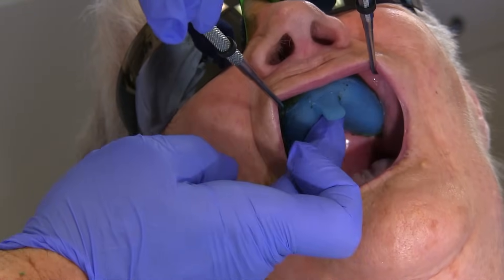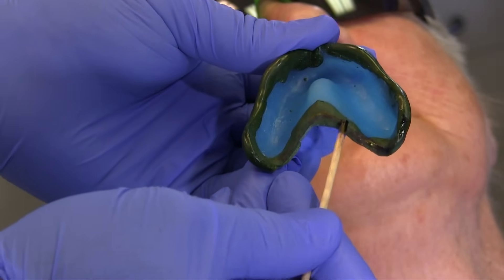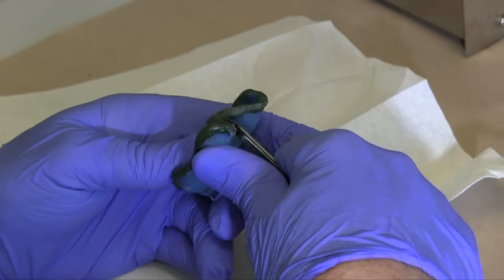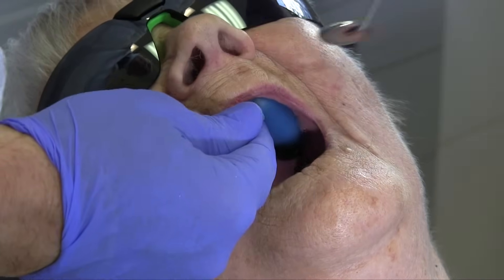Once the vibrating line and hamular notches have been marked, reinsert the tray. The line will transfer to the compound and it can be trimmed to the position. Re-soften the posterior aspects of the compound.